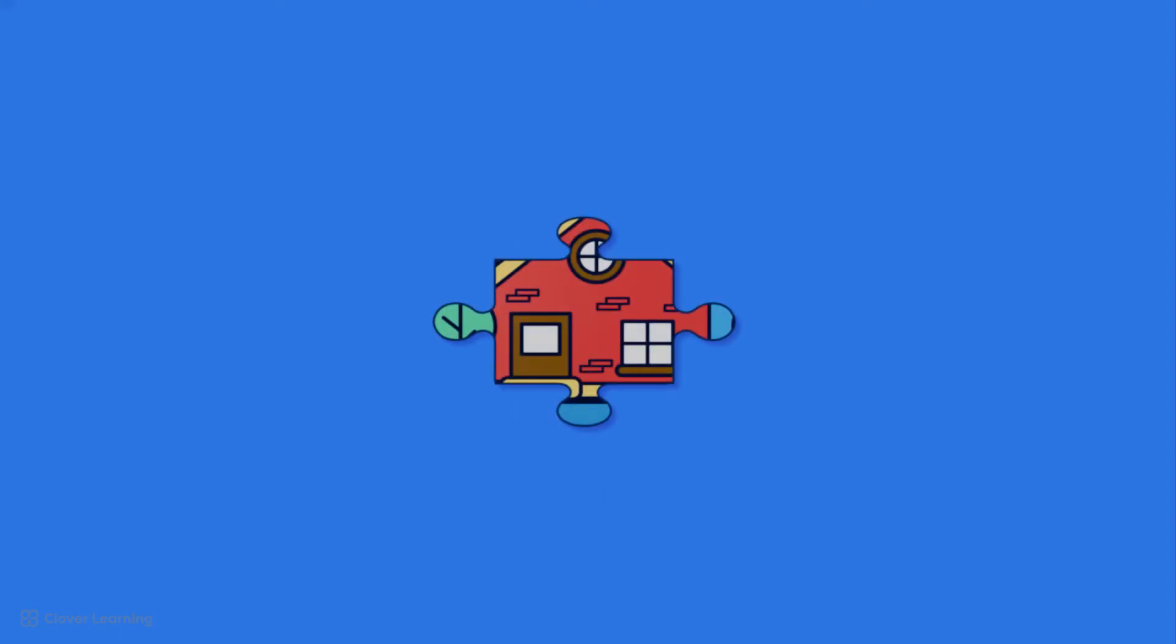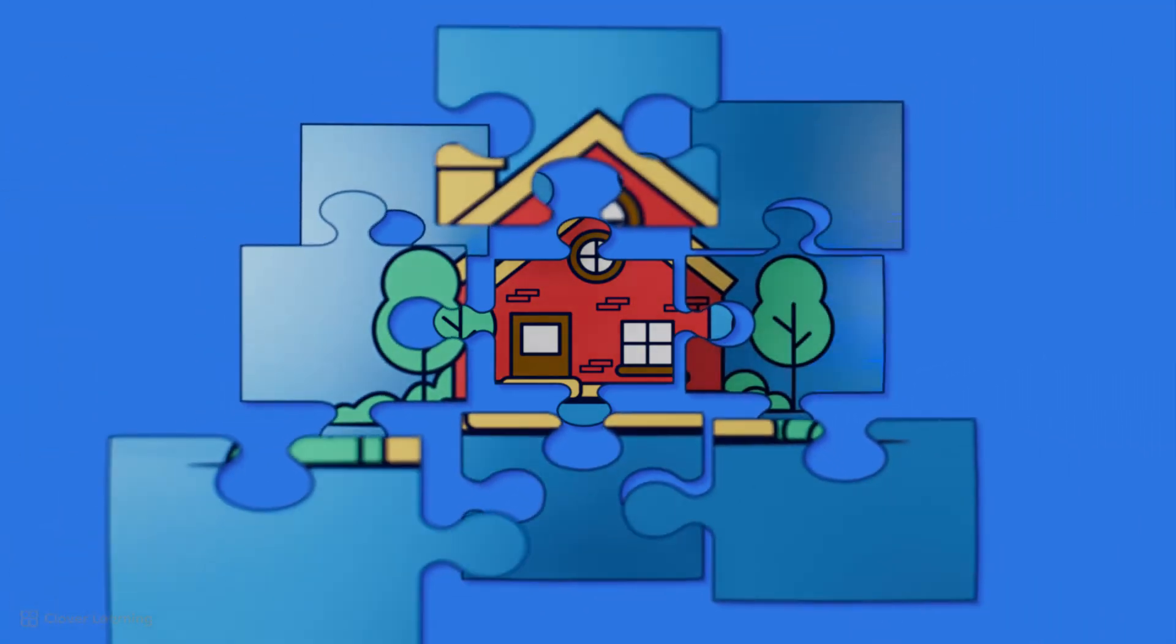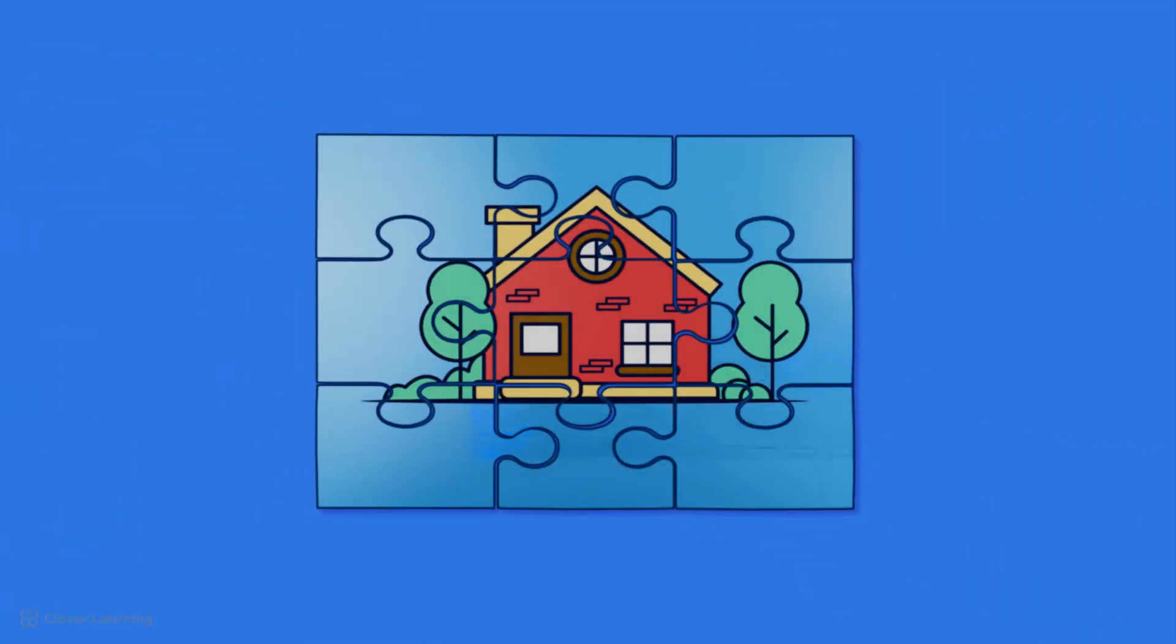You can think of k-space as a jigsaw puzzle. Each piece of the puzzle contains information that is necessary to complete the picture, but the piece itself doesn't show a mini version of the picture. Instead, each piece contributes to a pattern or texture that, when combined with all of the other pieces, forms the complete picture.